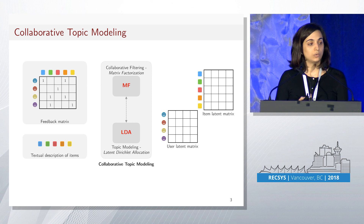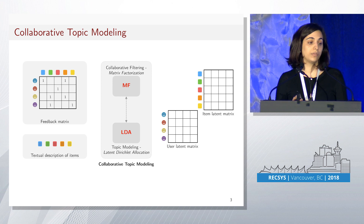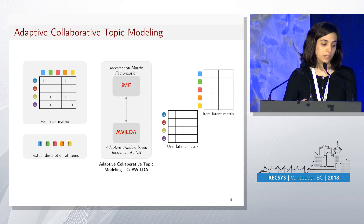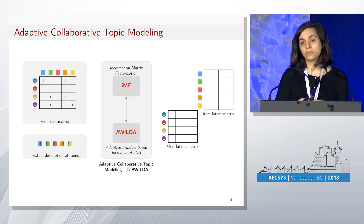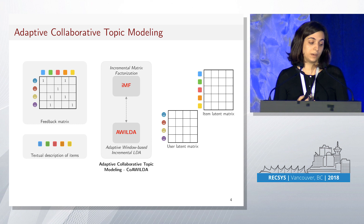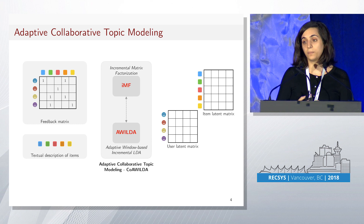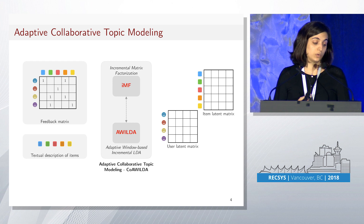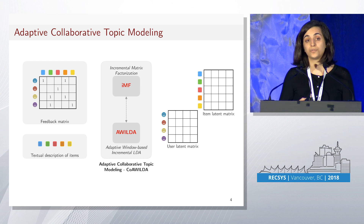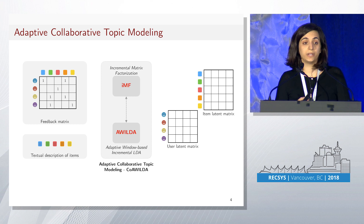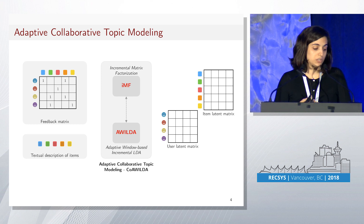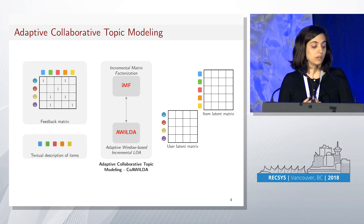The idea is to learn user latent factors based on the feedback matrix and on textual descriptions of items. In our work, in order to be able to update the models incrementally, we rely on incremental matrix factorization for the collaborative filtering part. We also propose a new approach for topic modeling which incorporates a drift detection component. Our approach is called AWILDA, and I will present it a little bit later.